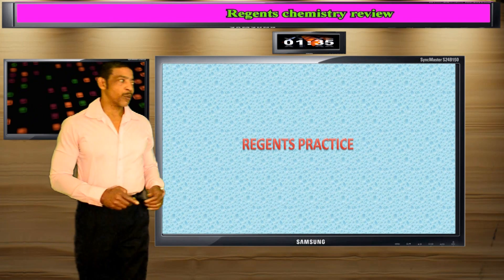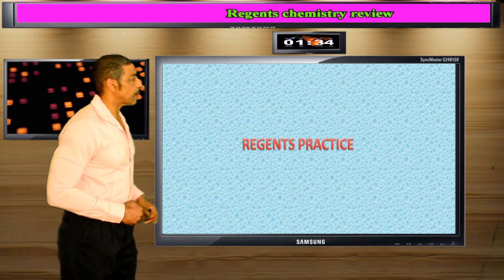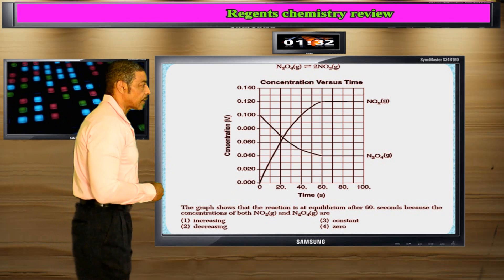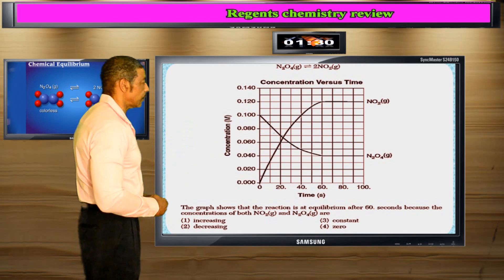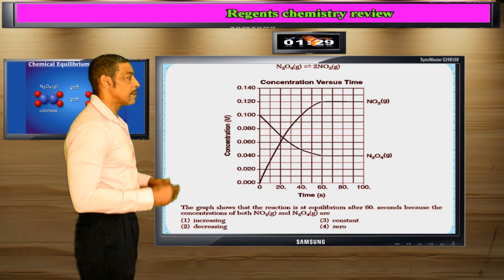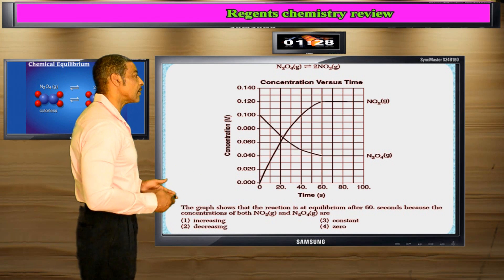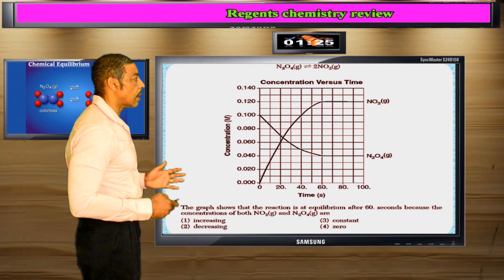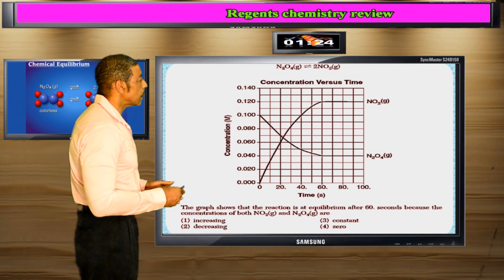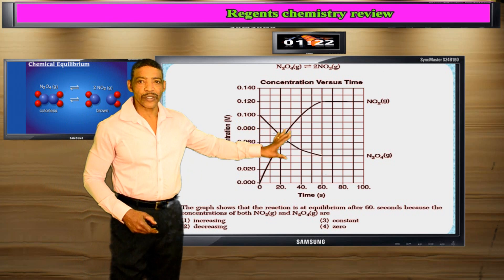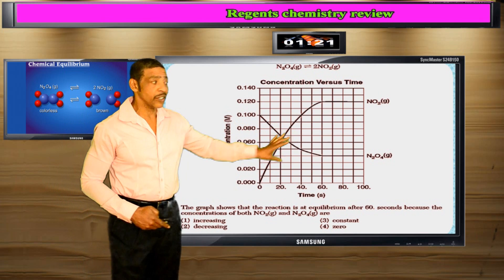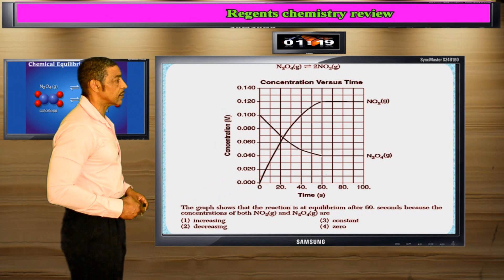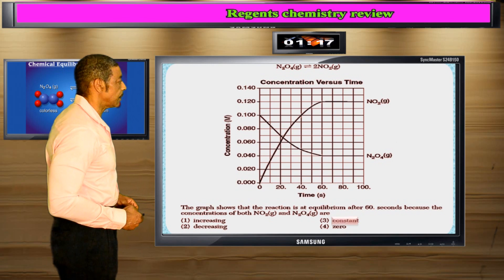Now for some practice questions, consider the following. The graph shows that the reaction is at equilibrium after 60 seconds, because the horizontal line represents that the concentrations of both N2 and N2O4 are constant. So the correct answer to this question is number 3.